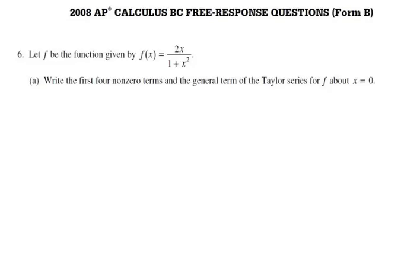In 2008, question number 6, form B, we're given this function f of x is 2x over 1 plus x squared. And we want to write the first four non-zero terms and the general term of the Taylor series for f about x equals 0.